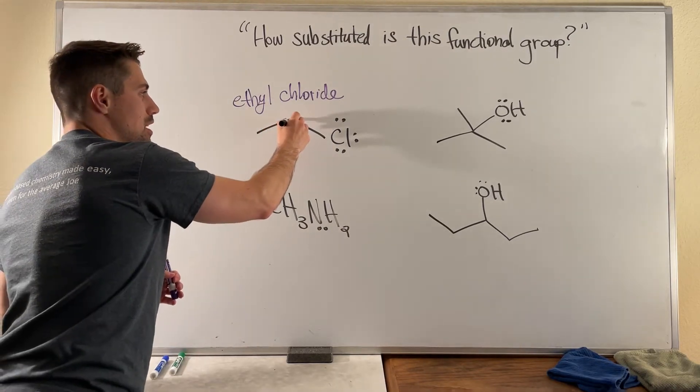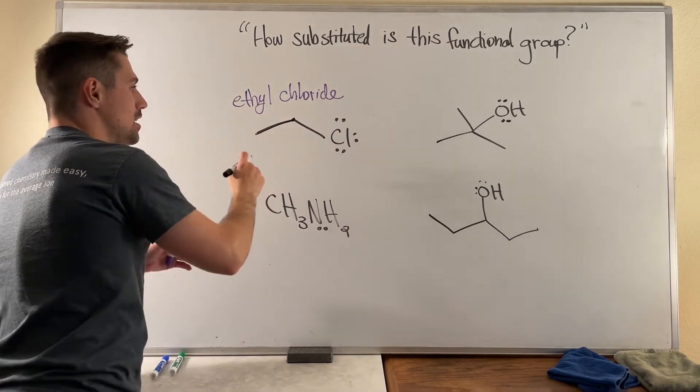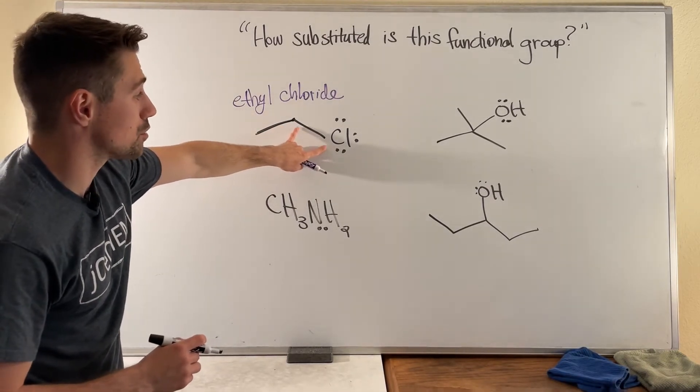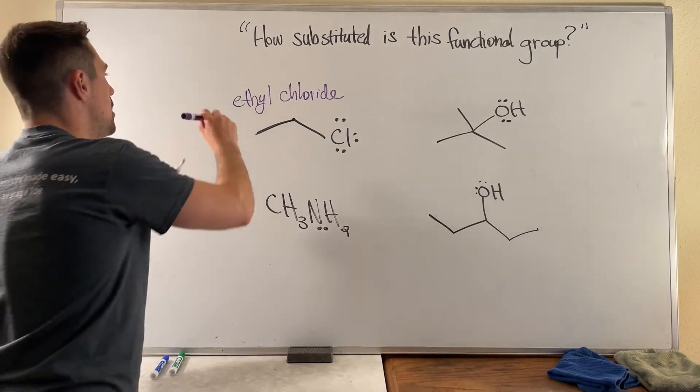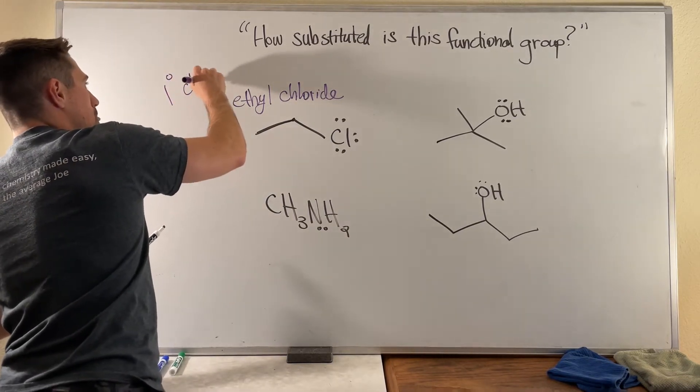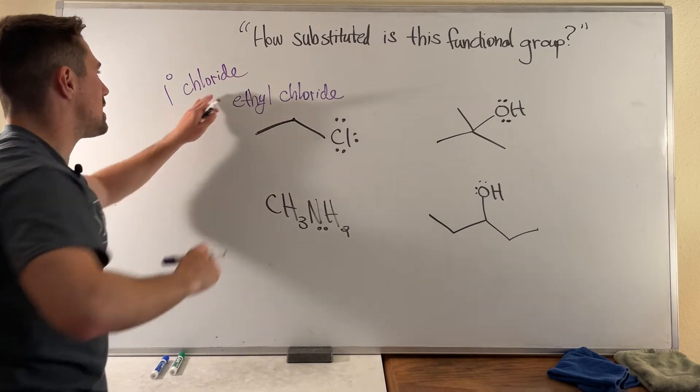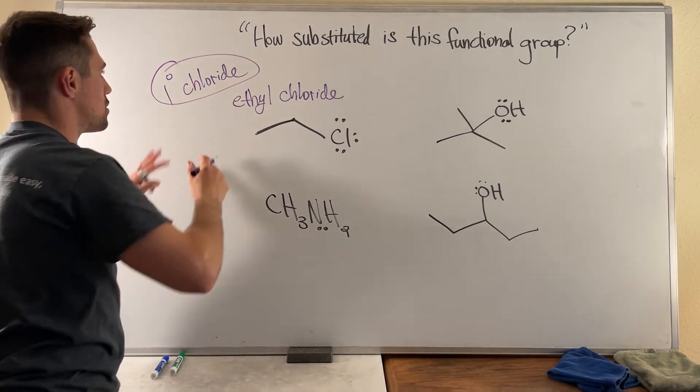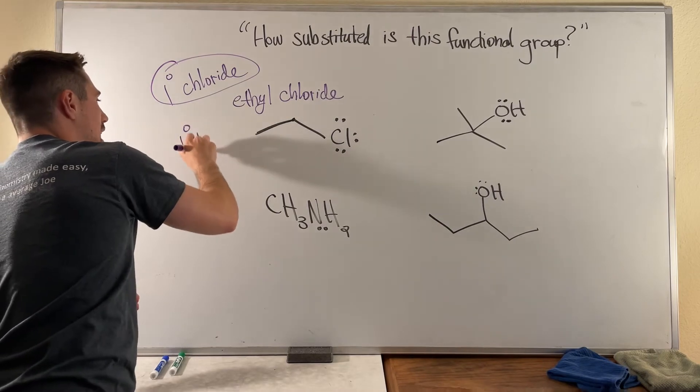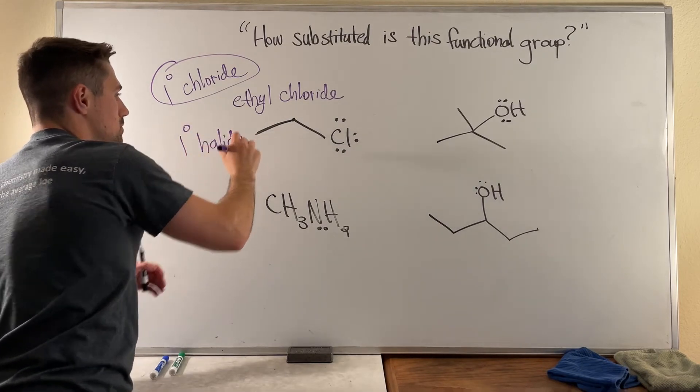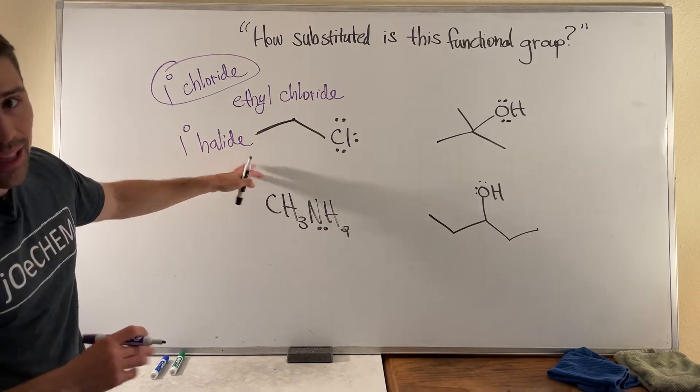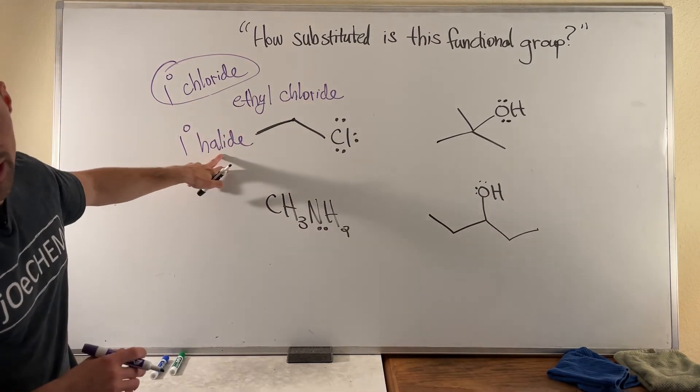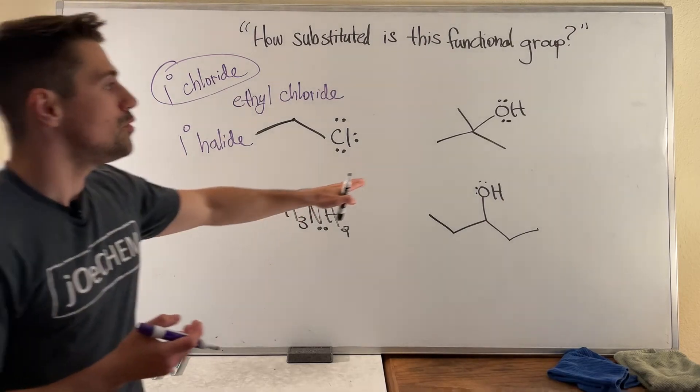But sometimes you just more specifically want to talk about how substituted the carbon that is attached to your functional group. So what you can also say about this structure, if someone asks you about it, is you could say that this carbon, which is only attached to one other carbon, you could say that not only is this a primary carbon, but you could talk more about the functional group it's attached to by saying this is a primary chloride or that the chloride is attached to a primary carbon. If you even wanted to be more generic, you could call this a primary halide because when you have a halogen attached to a carbon it becomes a halide.